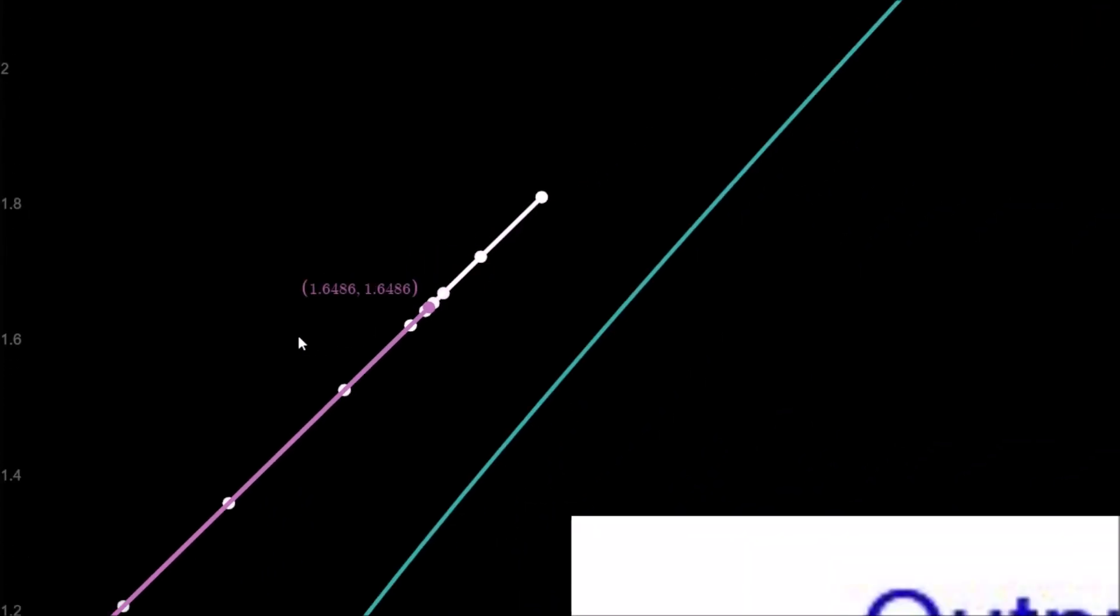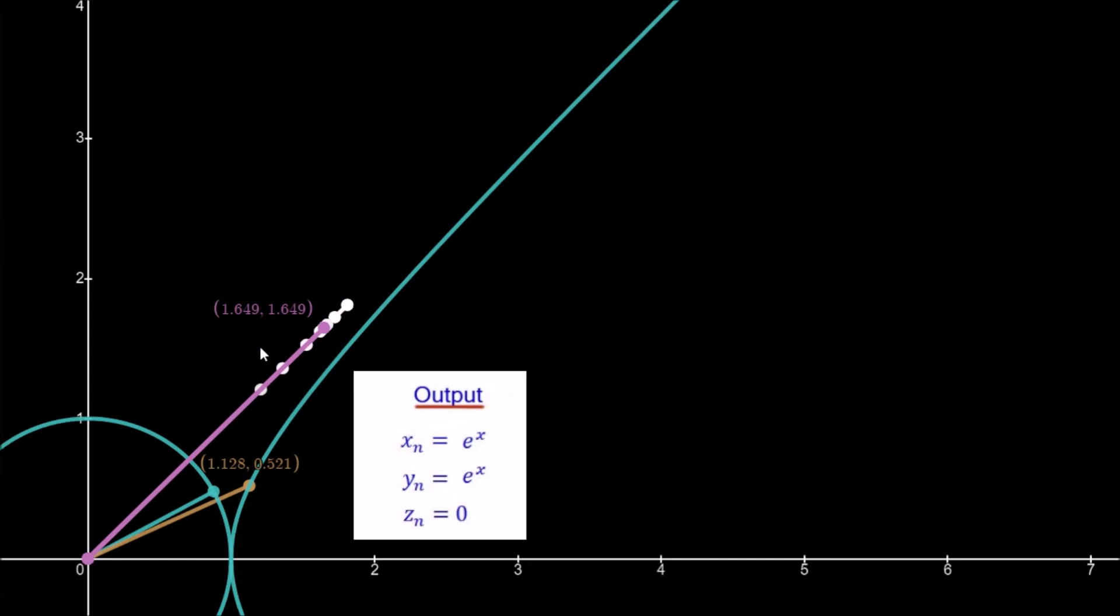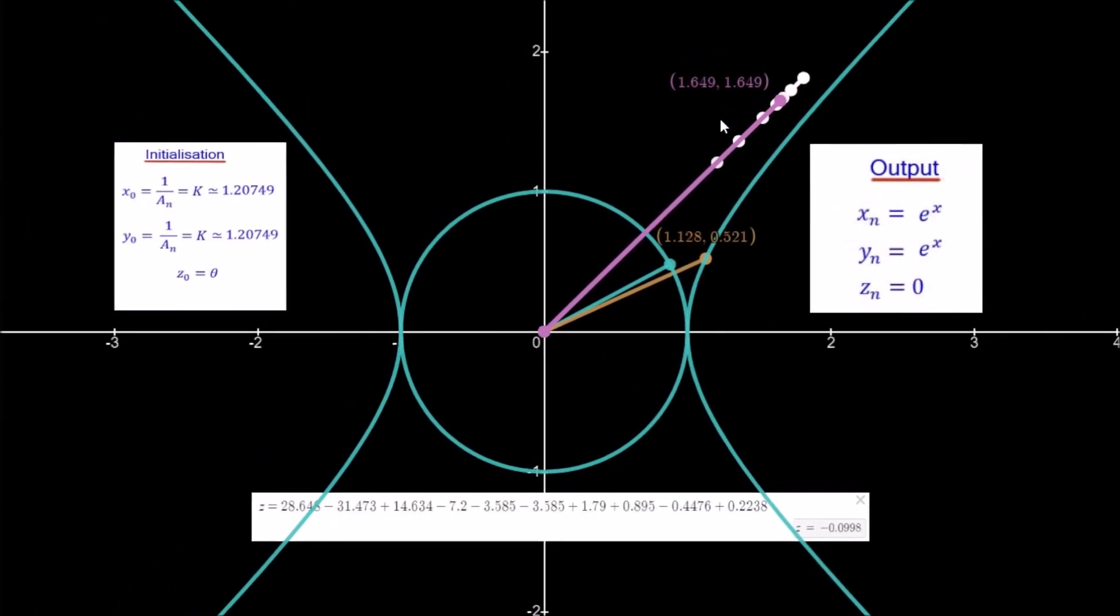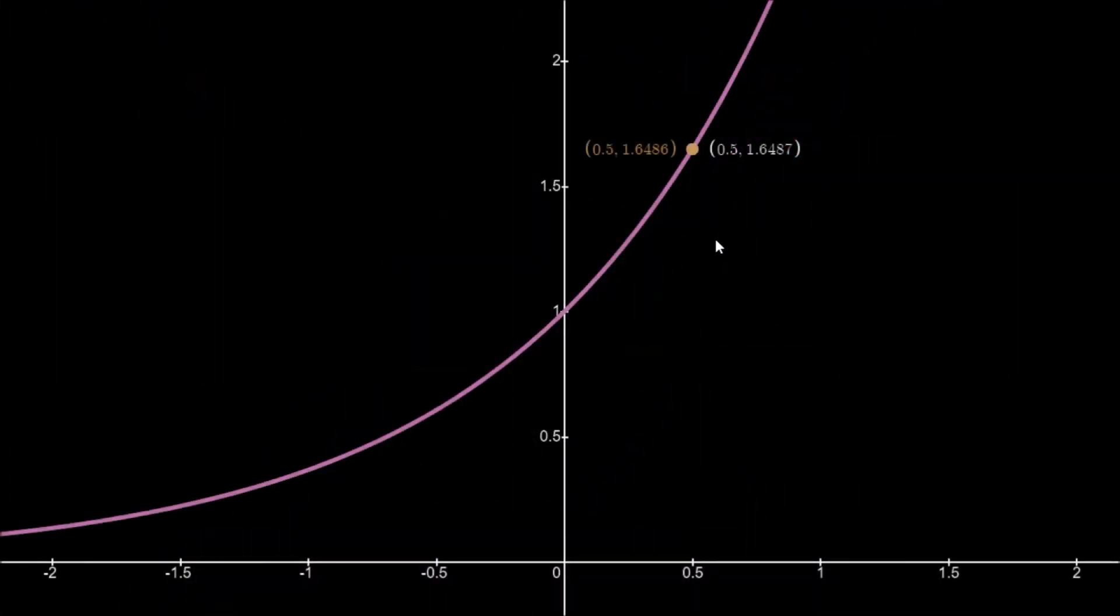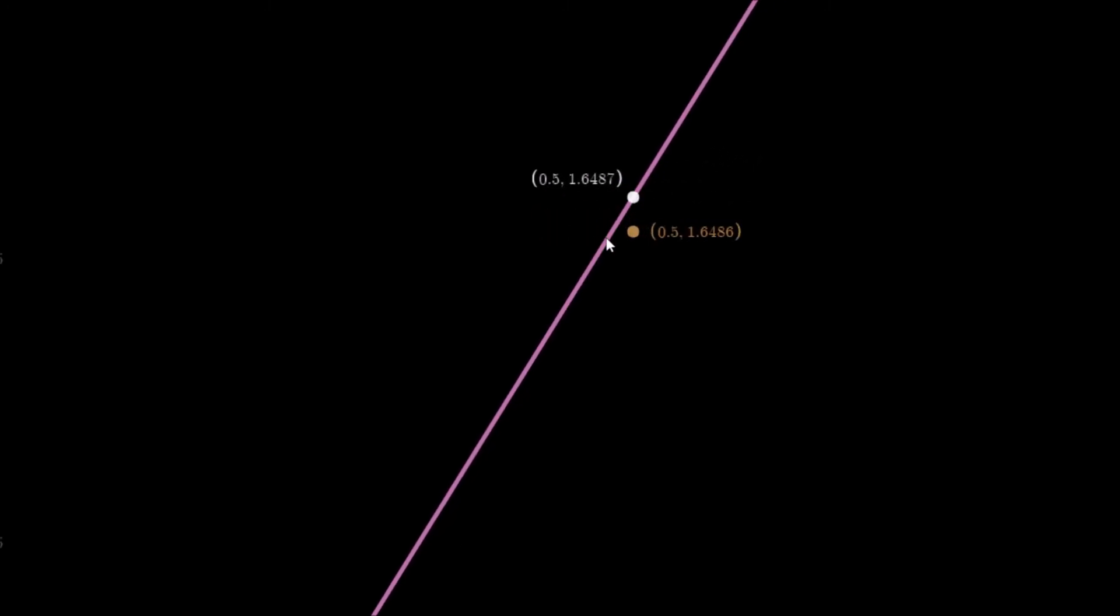Let's map these out in the graphical calculator. You can see our approximate value and the actual value plotted here. The one below is our approximation at 1.6486, and the actual is 1.6487.